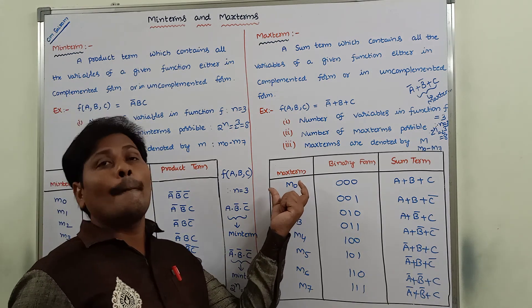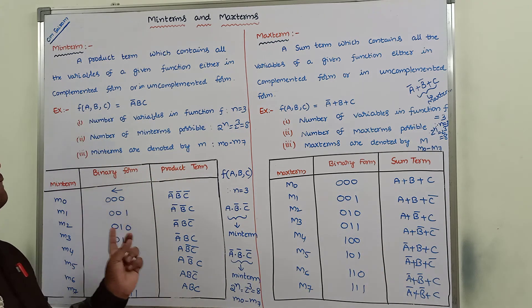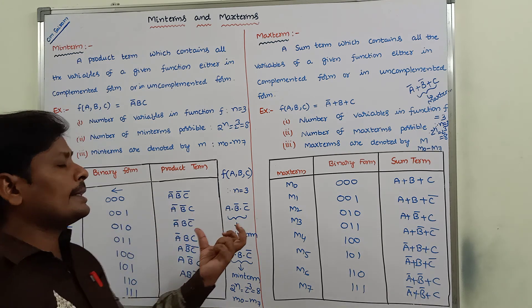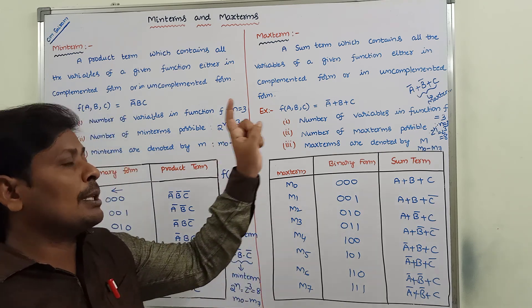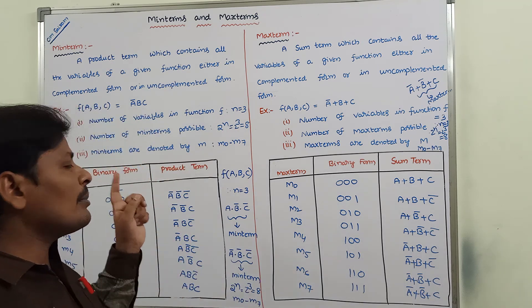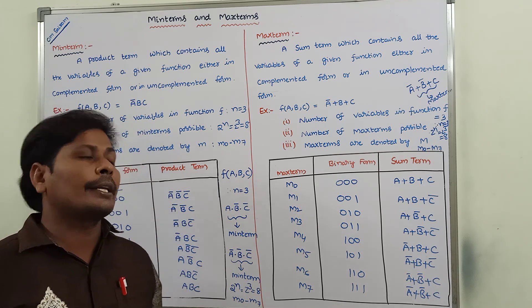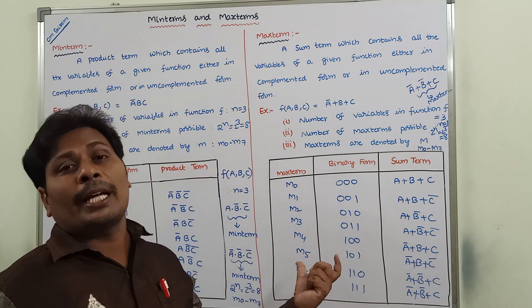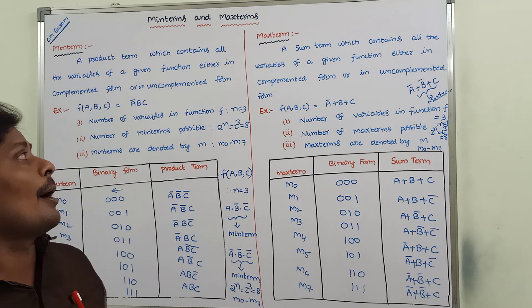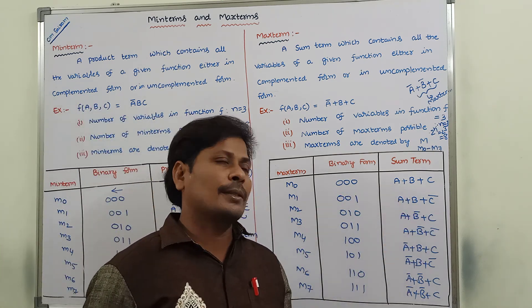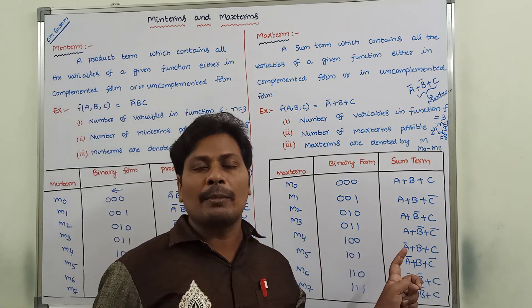So this is how we represent the possible number of max terms and their corresponding sum terms. The main differences between min terms and max terms: min term contains only product terms, while max term contains only sum terms. A min term is a product term which contains all the variables of a given function either in complemented or uncomplemented form, and similarly for max terms using sum terms.